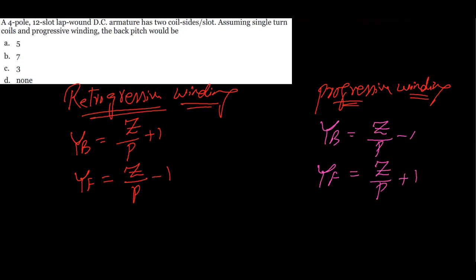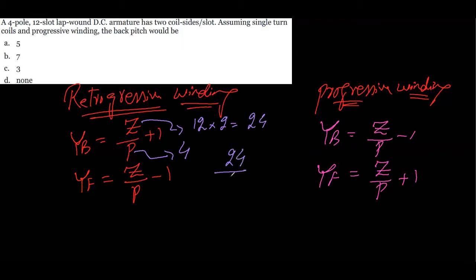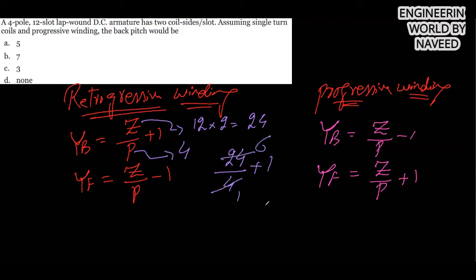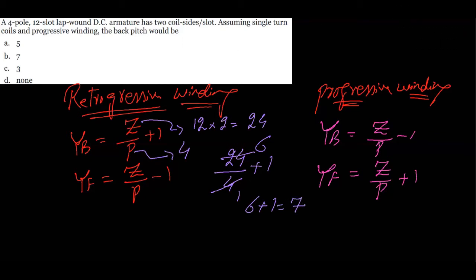Here the number of poles is four, and the total conductors Z = 12 slots × 2 coil sides = 24. For progressive winding, back pitch = Z/P + 1 = 24/4 + 1 = 6 + 1 = 7. So option B, seven, is the correct answer.